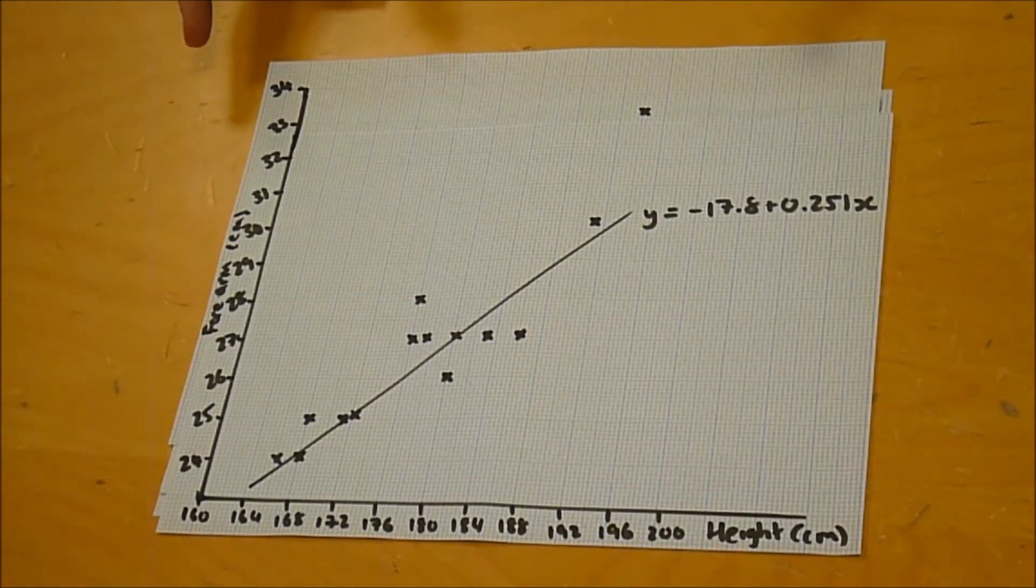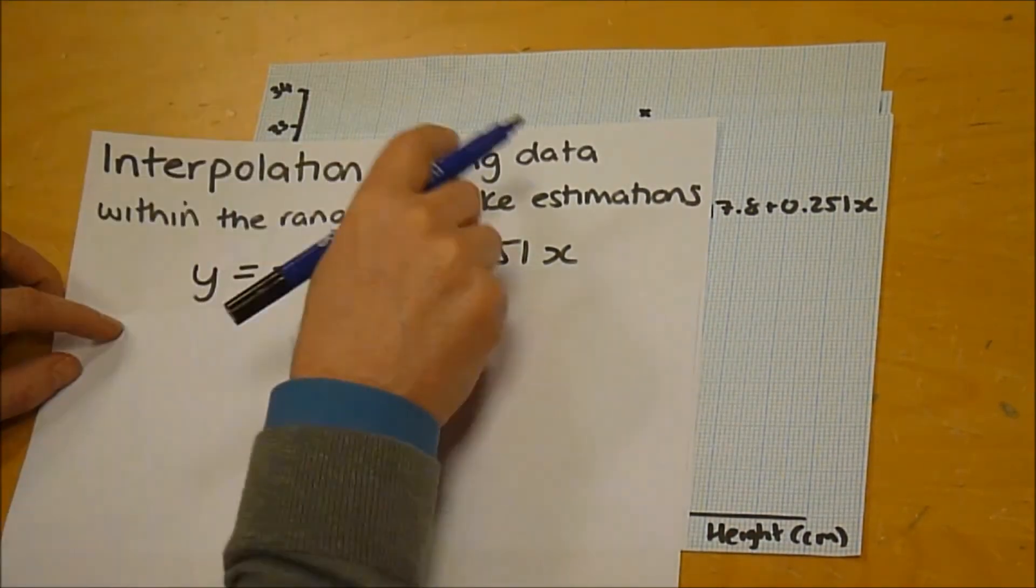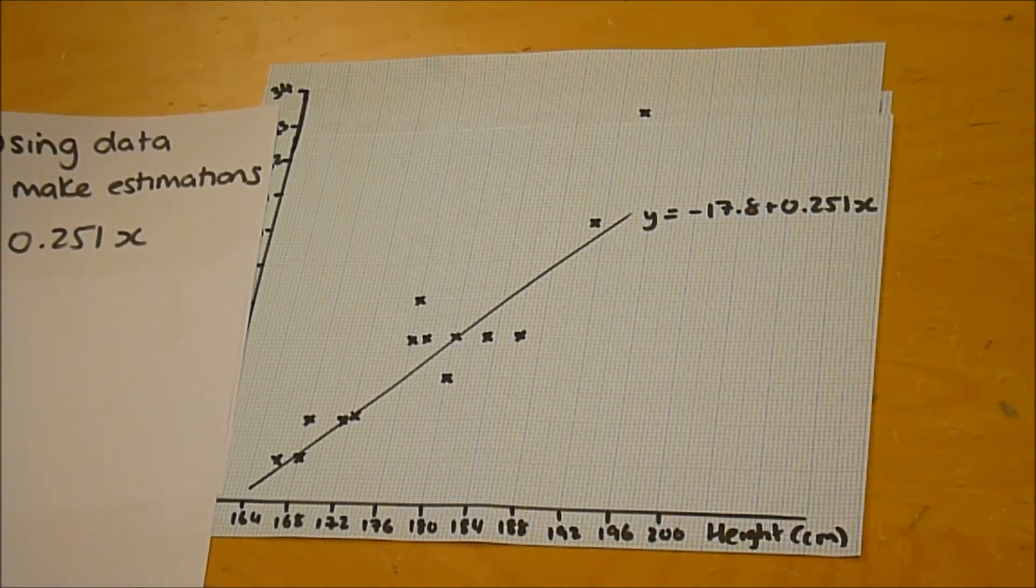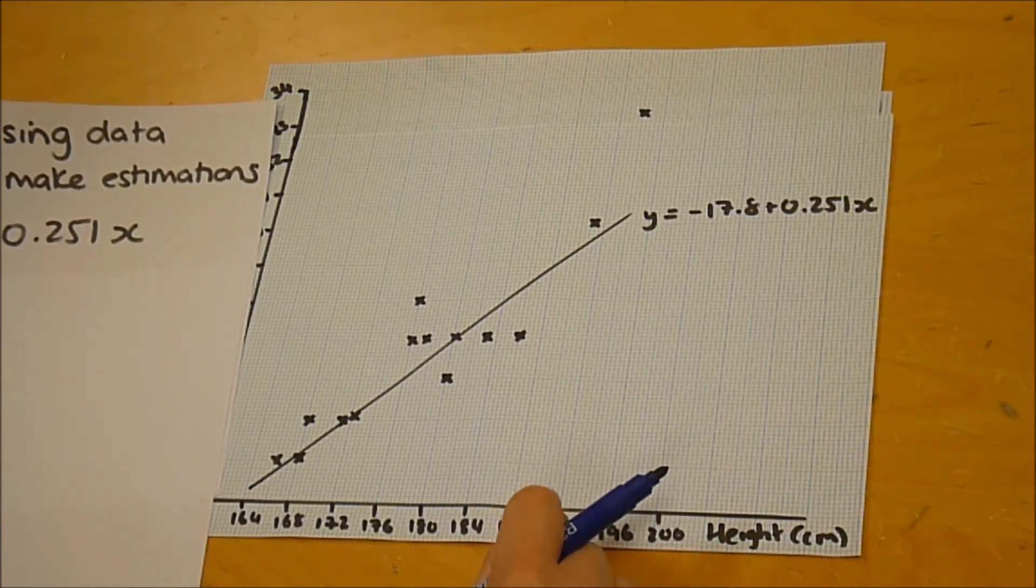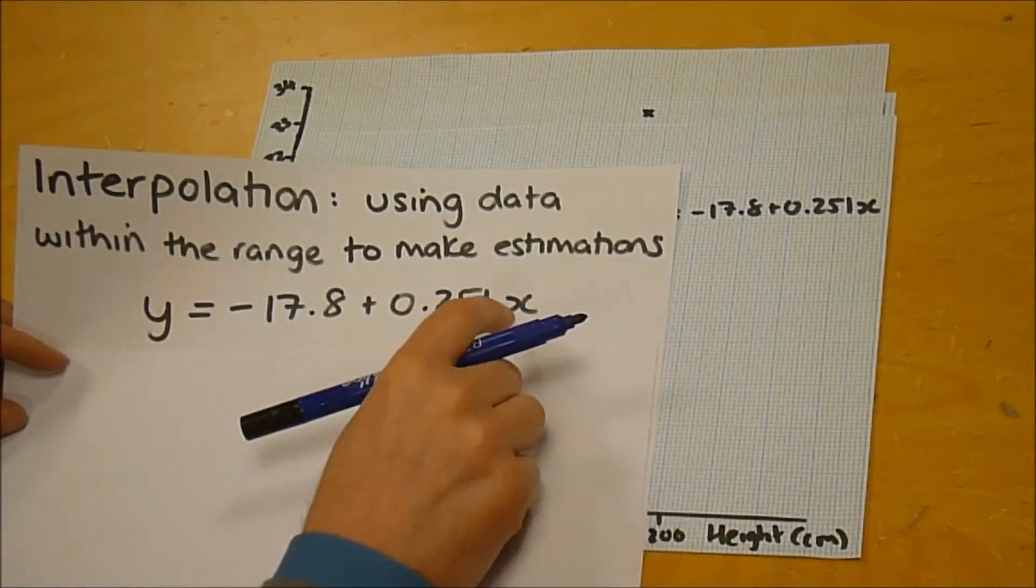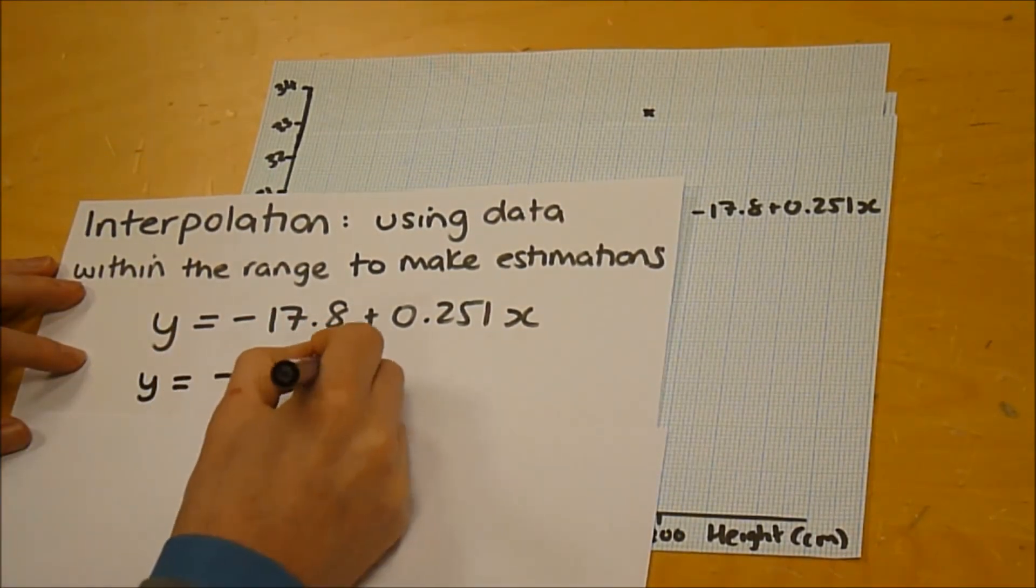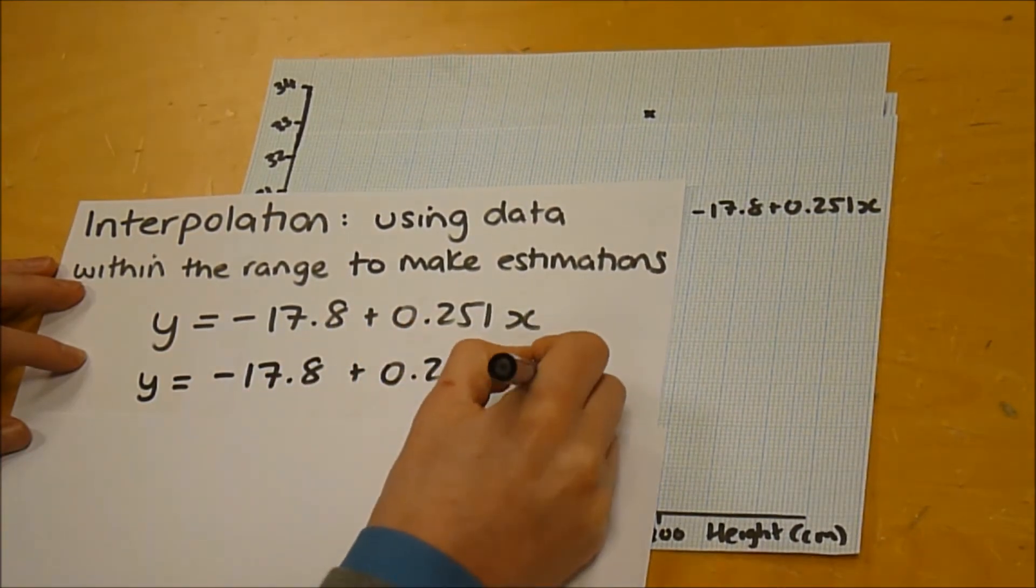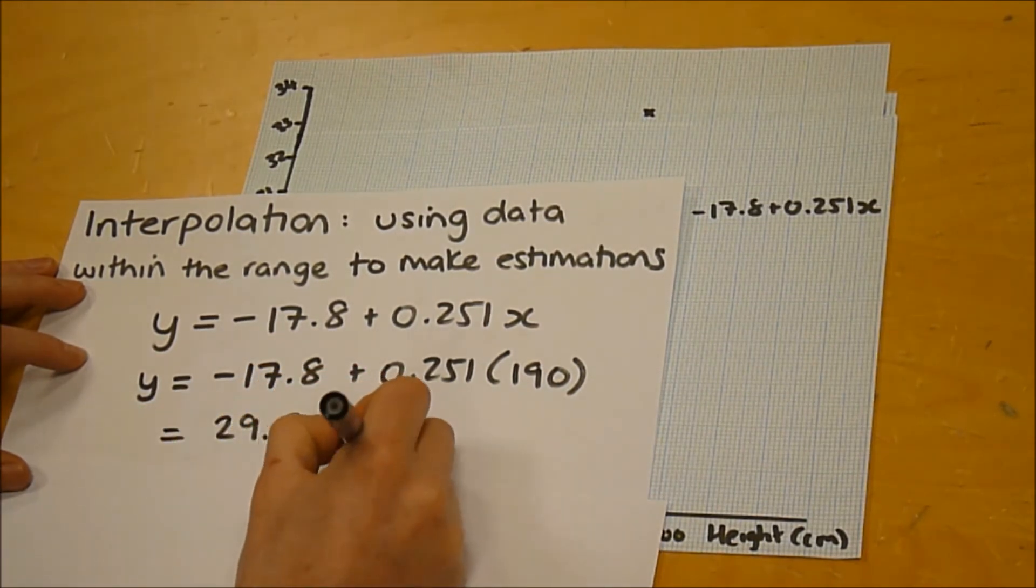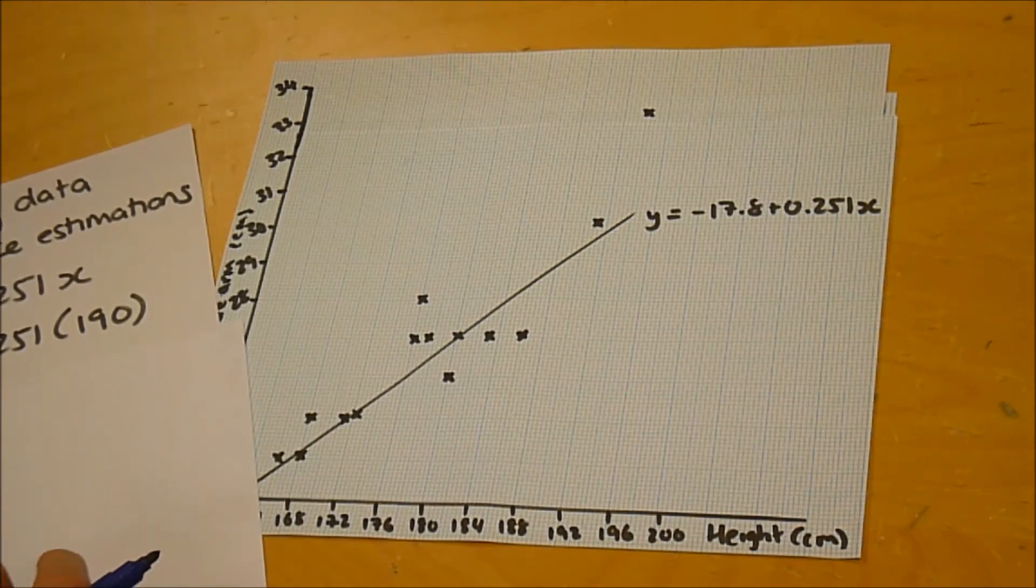Okay then, so once we've done this regression line, we can use it to estimate values. Yeah, and that's what is known as interpolation. So interpolation is using the data within the range to make estimations. So what height are you interested in? 190. So if we take 190, in GCSE you would have gone up to the line and read across, but we have the actual equation of the line, so we can just substitute an x value of 190 into this. So we get y equals minus 17.8 plus 0.251 times 190, and you type that in your calculator and it comes out as 29.89. Real quick on your calculator, isn't it? Yeah, that's right. Okay, so what if I'm interested in like 300, so when he's like really tall, I can use that as well then? Well, no.